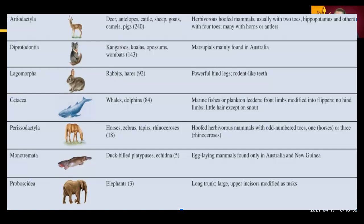Cetacea includes whales and dolphins. They eat marine fish and plankton. They have front limbs modified into flippers, but follow the same bone structure as humans, bats, and other mammals. They have no hind limbs — these have become vestigial organs — and little hair except on their snout. Perissodactyla includes horses, zebras, tapirs, and rhinoceroses — hoofed herbivores with an odd number of toes: one for the horse, three for the rhino. Monotremata includes the duck-billed platypus and echidna — egg-laying mammals found only in Australia and New Guinea. Proboscidea are the elephants, which have large trunks and modified tusks instead of upper teeth.